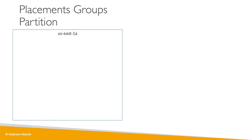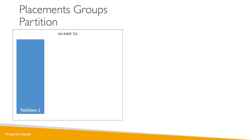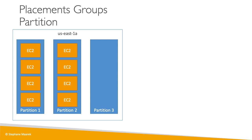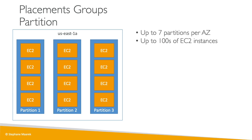For the partition placement group, within an AZ we have different partitions — partitions are a set of racks. In this example there are three partitions, but you can create up to seven partitions in a partition placement group. On each partition you will have different EC2 instances — in this example, four EC2 instances per partition. Within a partition all EC2 instances could fail together, but across two partitions there is no shared failure. You would use this for an application that can tolerate a whole rack going down as long as your data is also partitioned.